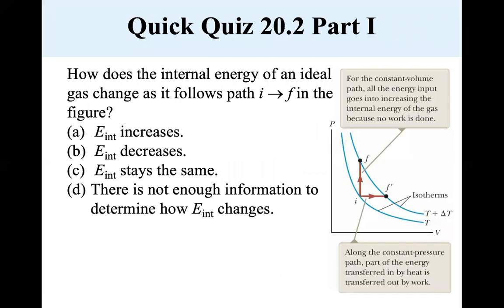How does the internal energy of an ideal gas change as it follows path I to F in the figure? Well, the I to F, there's no delta V, so no work is done, but the internal energy increases.